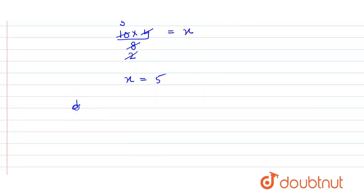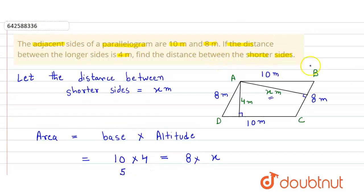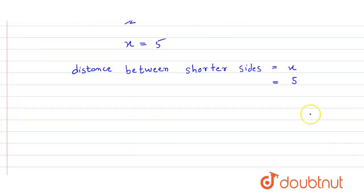So here the distance between the shorter sides that we have considered to be x, it will be 5 meter. So here we get the answer in meter, and that's our answer.